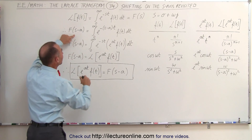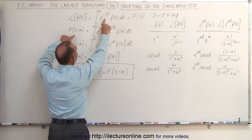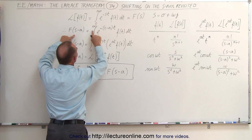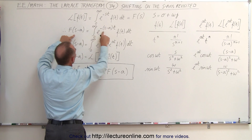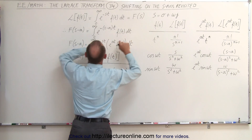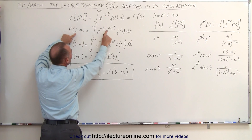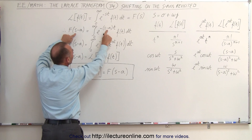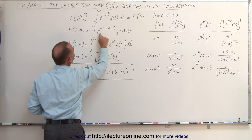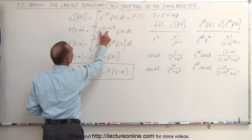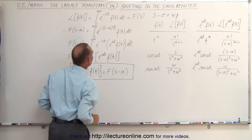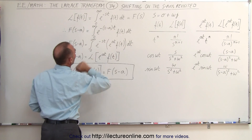Notice that instead of S, we're going to write S minus A, because that's the equivalent — just like we have S in the original expression. If we write S minus A, we must write S minus A inside the integral sign. So instead of the original form, we have E to the minus (S minus A) times T, times the function, DT. This is still correct.